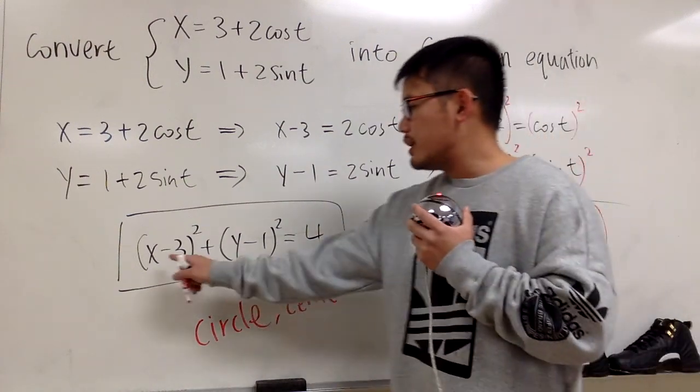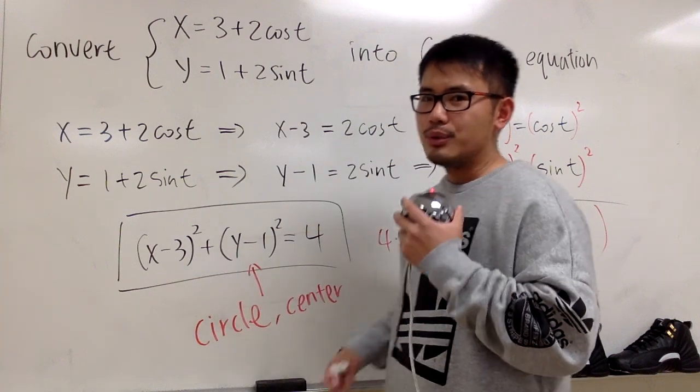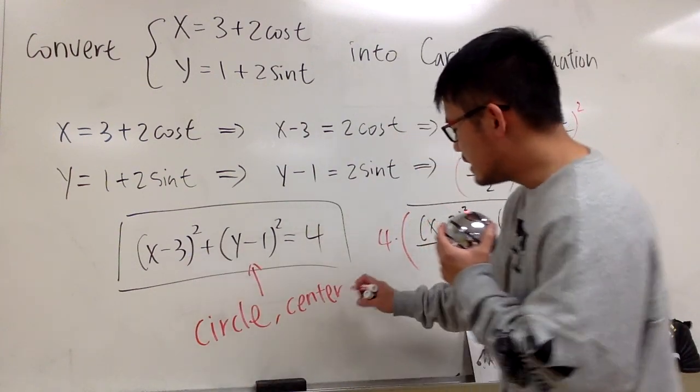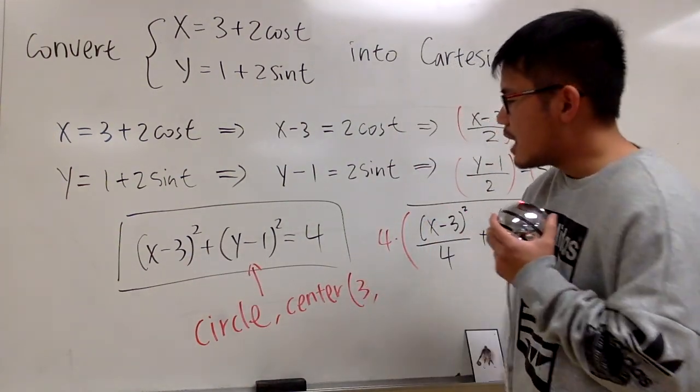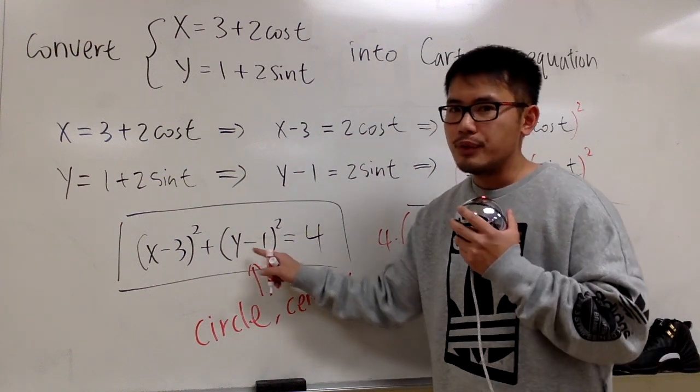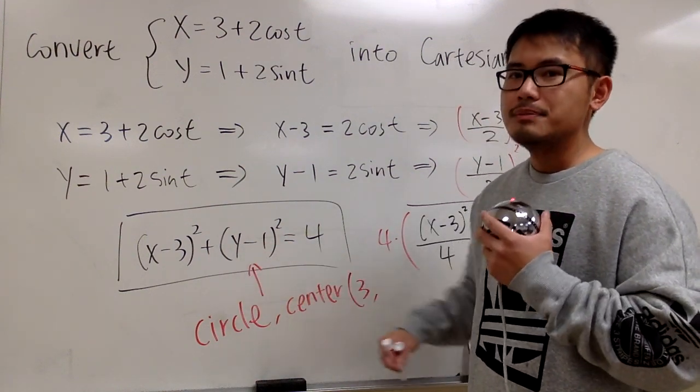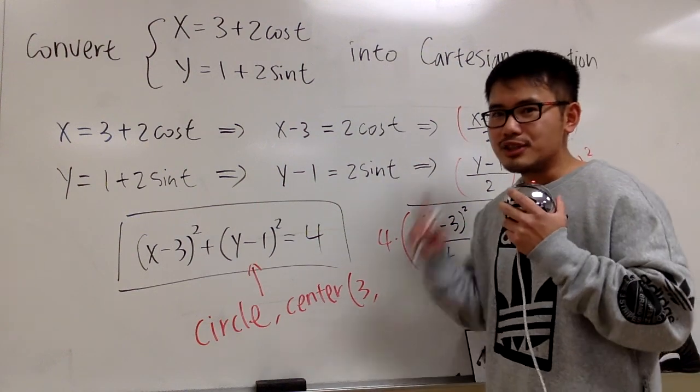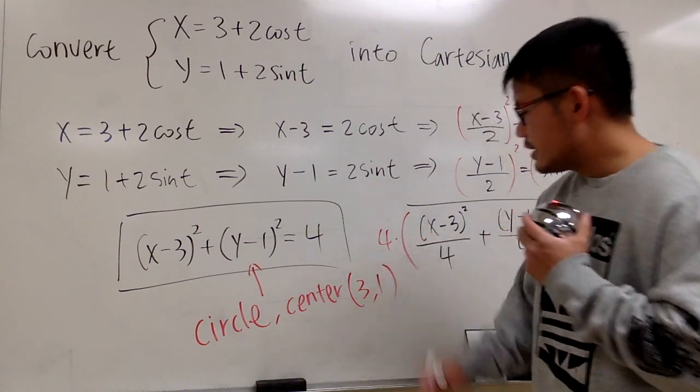The center, look at the x, we have x minus 3, and you do the opposite of what you see. So center is actually at 3, comma. Likewise, for the y, you do y minus 1, right? But then this y value of the center, it's actually 1. Center, 3 comma 1, and then we also have to talk about the radius.